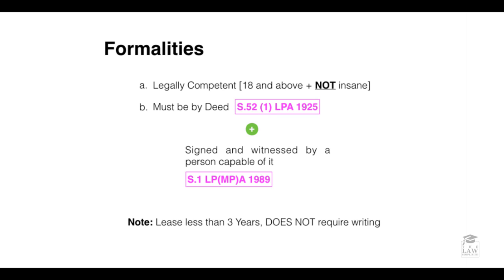As a conclusion to this section, the formalities for leases are as follows. To enter into a leasehold contract, you must be legally competent — meaning 18 and above and of sound mind. It must be by deed as per section 52(1) of the Law of Property Act 1925, and signed and witnessed by a competent person as per section 1 of the Law of Property (Miscellaneous Provisions) Act 1989. Note that for a lease of less than three years, writing is not required.